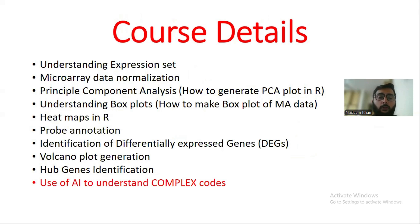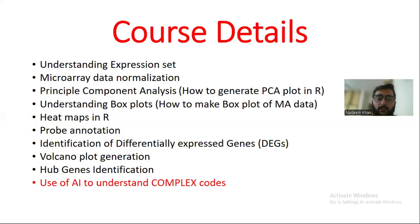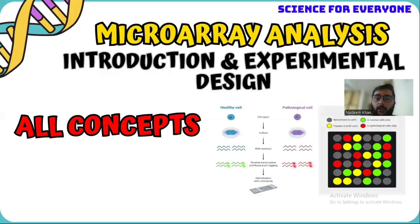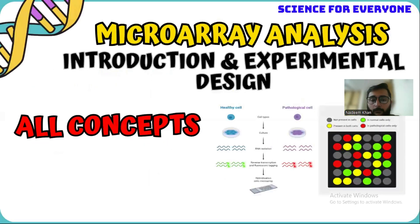We will talk about PCA, box plots, and MA plots. Permutations and identification of differentially expressed genes, volcano plot generation, hub genes, and use of artificial intelligence to understand complex networks. This is our course's full content. We will try to cover it maximum to maximum.